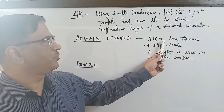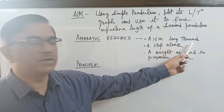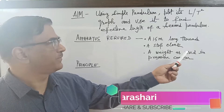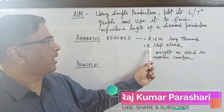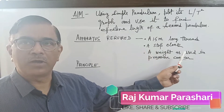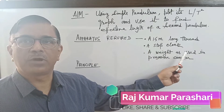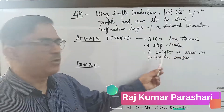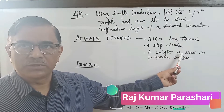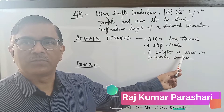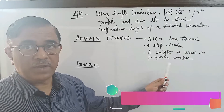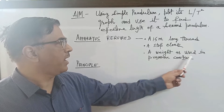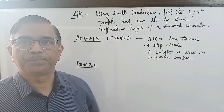What apparatus should be used in homely conditions? You will need a 1.5 to 2 meter long thread — the same kind used to fly kites. You need a stop clock, the same as found on a smartwatch, or a mechanical watch with a second hand. In place of a spherical bob, you need a weight as used in a pressure cooker.